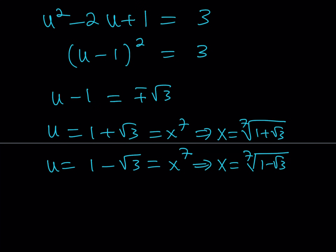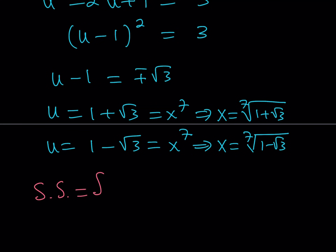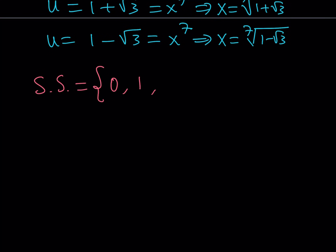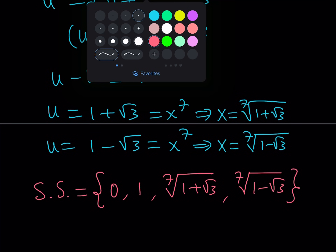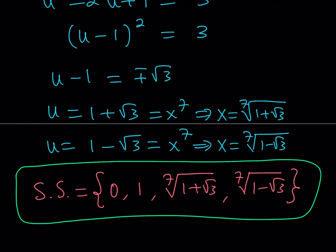What about complex solutions? The 7th roots of (1 plus root 3) and the 7th roots of (1 minus root 3) will also yield complex solutions. Let's put it all together and write down our real solutions as a set. Our solution set is: x equals 0, x equals 1, x equals the 7th root of (1 plus root 3), and x equals the 7th root of (1 minus root 3). These are all the real solutions, and we also have complex solutions as discussed. Thank you for watching — please like, comment, and subscribe. I'll see you tomorrow with another video. Until then, be safe, take care, and bye-bye.